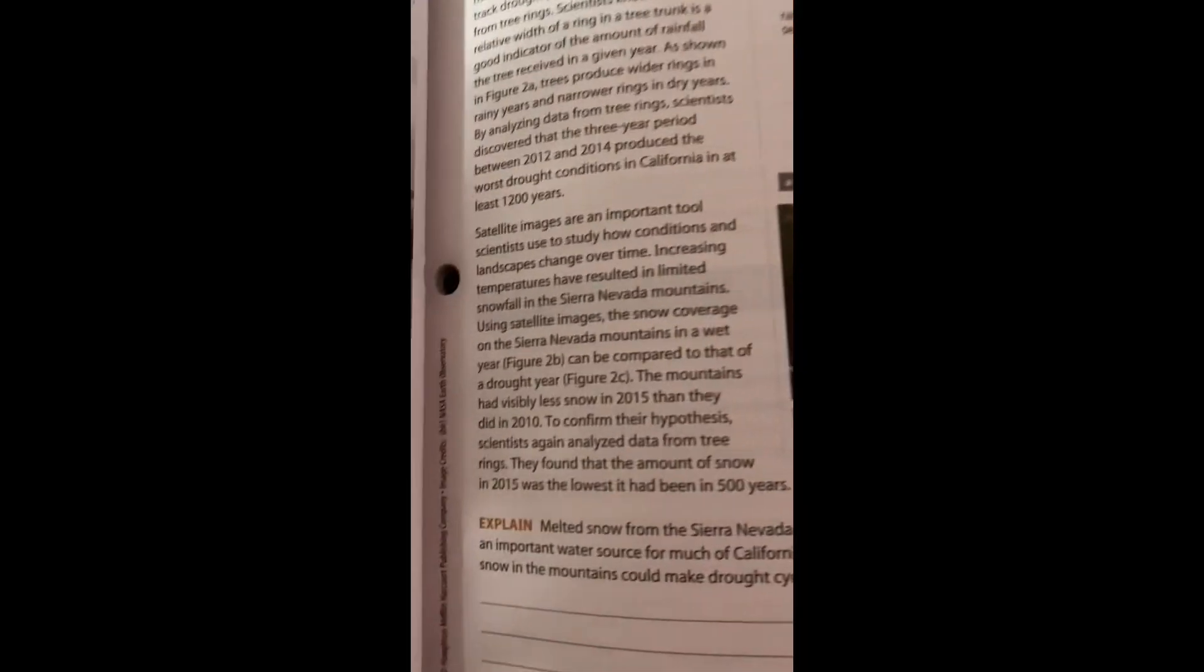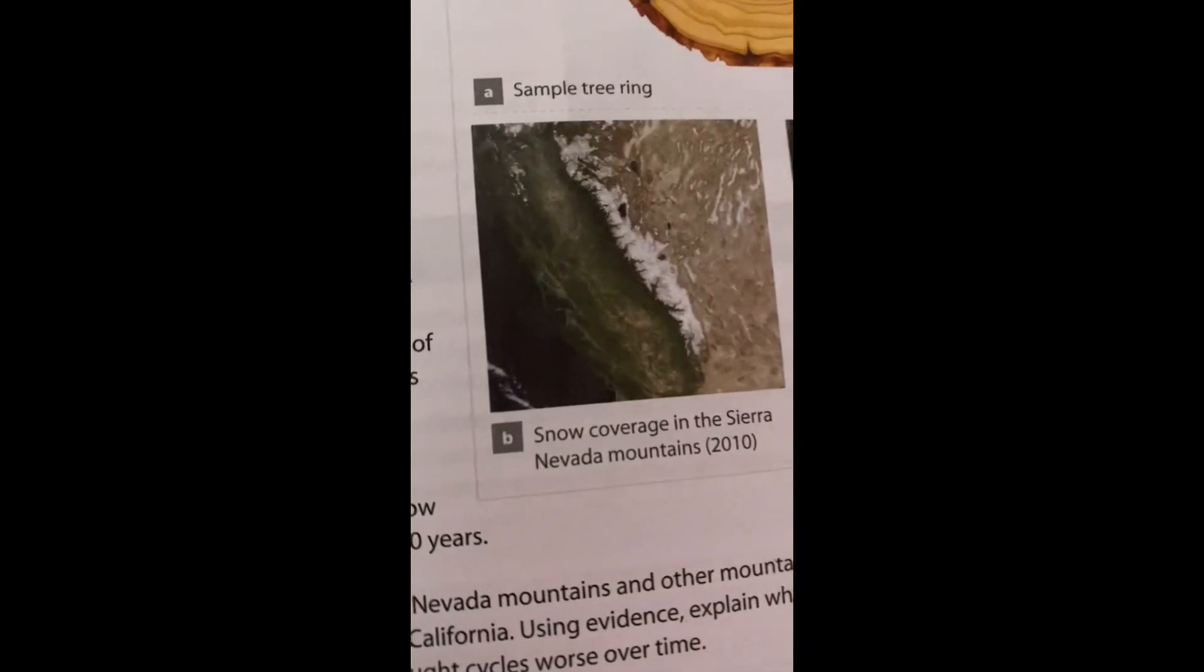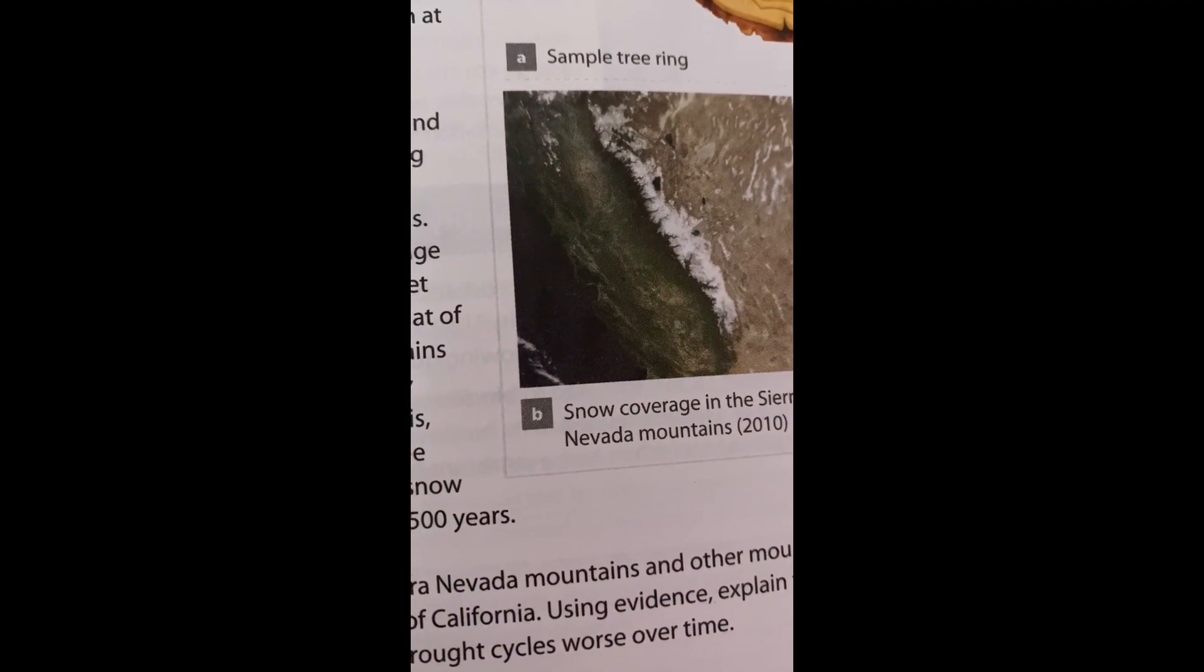Natural Disturbances are the damage and destruction to ecosystems caused by nature. Tornadoes, earthquakes, volcanoes, and lightning-caused forest fires are all examples.